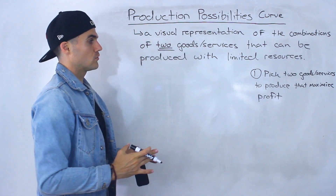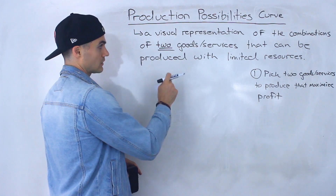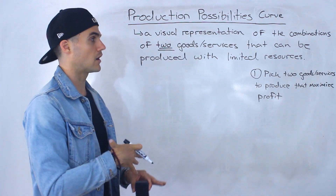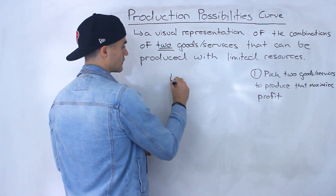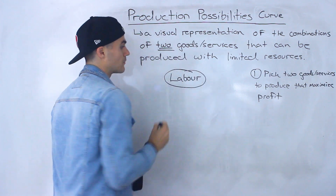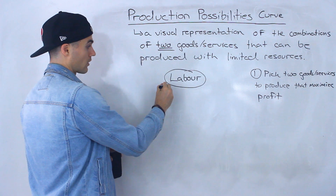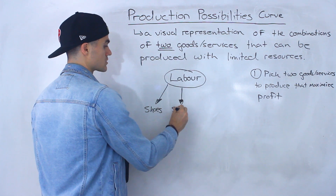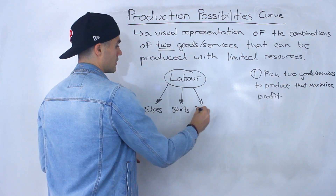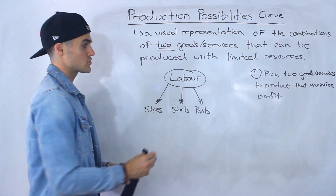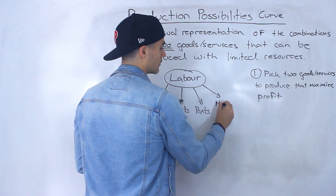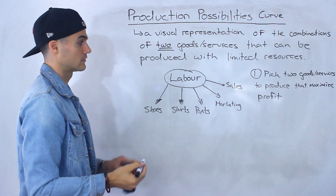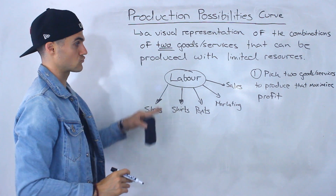Let's say you own an online clothing store. You have limited resources — there are four types of resources we'll cover in a future video: land, labor, capital, and entrepreneurship. Let's say you have a certain amount of workers, a certain amount of labor. What can you use this labor for? You could produce shoes, shirts, or pants for your store. It doesn't even have to be a product — you could use this labor for marketing, sales, accounting, etc. There are different things that this resource can be used for.